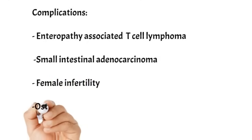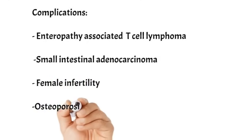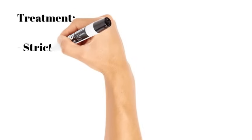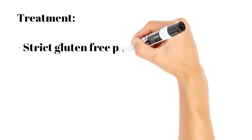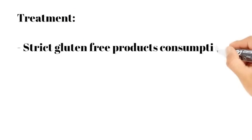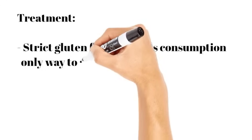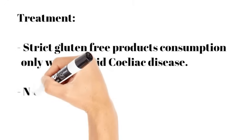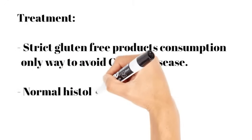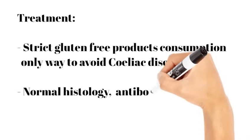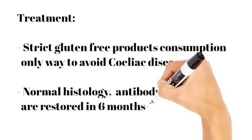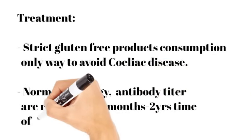Now coming to the treatment, a strict gluten-free diet is the only way to avoid celiac disease and its complications. Generally, adherence to the gluten-free diet leads to normal histology and antibody titers within six months to two years.